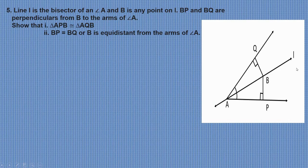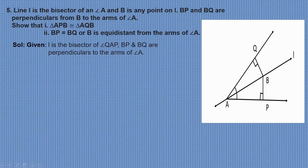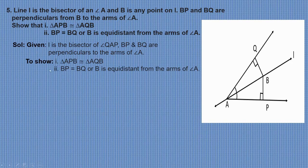Next problem. Line L is the bisector of angle A and B is any point on L. BP and BQ are the perpendiculars from B to the arms of angle A. We need to show that triangle APB is congruent to triangle AQB, and also that BP equals BQ, meaning B is equidistant from the arms of angle A. Given: L is the bisector of angle QAB, and BP and BQ are perpendicular to the arms of angle A.